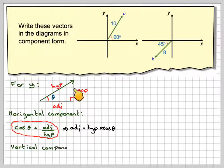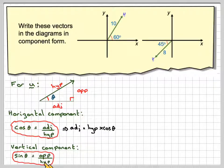And then the vertical component, which is this one, we know that sine theta is opposite over hypotenuse, which would mean that the opposite is going to be equal to the hypotenuse times the sine of the angle.